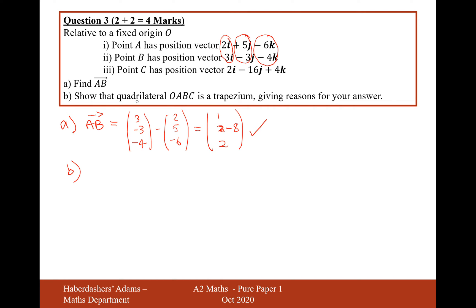Now, part B, show that the quadrilateral OABC is a trapezium, giving reasons for your answer. Well, the only property of a trapezium is that it has a pair of opposite parallel sides. A trapezium is a four-sided shape with a pair of parallel sides. That's the only real property of a trapezium.